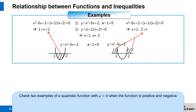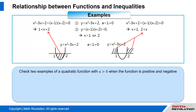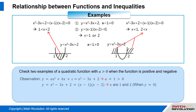For example, let us check two examples of a quadratic function with a is greater than 0, when the function is positive and when the function is negative. First, let us make observations on the function.